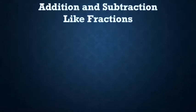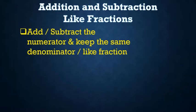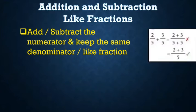Now let us learn how to add and subtract like fractions. If you want to add or subtract like fractions, you have to add or subtract the numerators and keep the same denominator. For example, 2/5 + 3/5 is equal to (2+3)/5. That is the correct way to add like fractions.